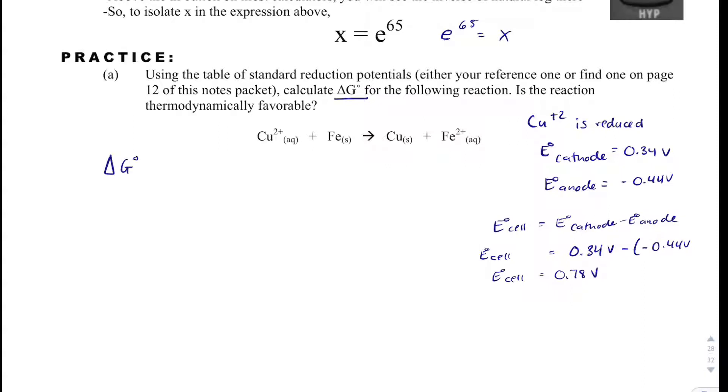Delta G is equal to minus N, F, E. Our N here, it looks like it's 2. F is always 96,485 coulombs per mole, and then E is 0.78 volts.